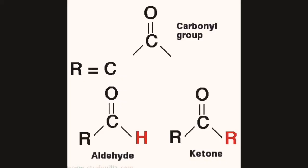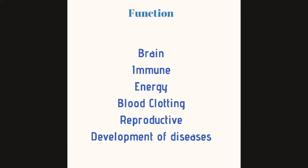Before I go on explaining what carb craving is, I just want to tell you what carbohydrate is. Carbohydrate is a form of aldehyde and ketone. They combine and form a polymer. Polymer actually helps to store food in the body in the form of energy, and it also makes structure for plants.